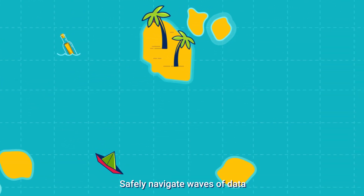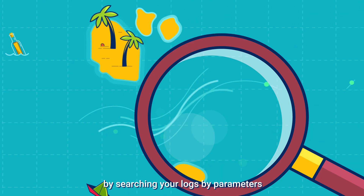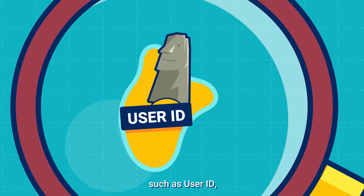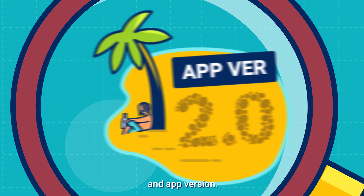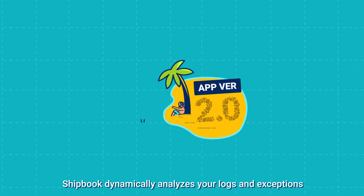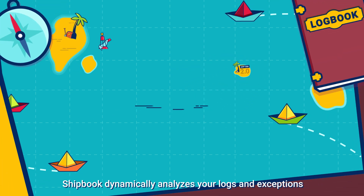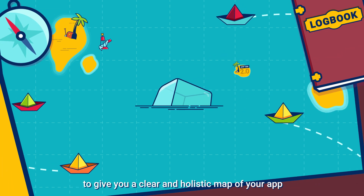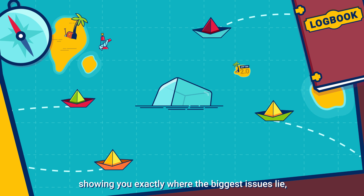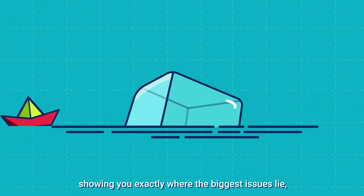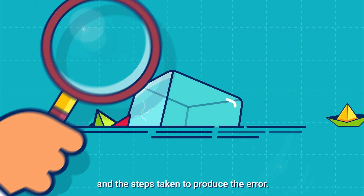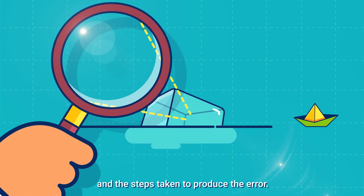Safely navigate waves of data by searching your logs with parameters such as user ID, device type, and app version. Shipbook dynamically analyzes your logs and exceptions to give you a clear and holistic map of your app, showing exactly where the biggest issues lie, what types of users are being affected, and the steps taken to produce the error.